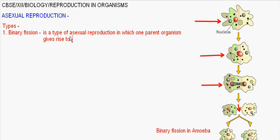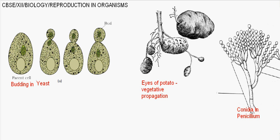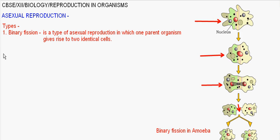Binary fission is found in amoeba. Another type is fission found in Plasmodium, where one individual cell divides into many progenies. In the next page, we can also see budding — most common in yeast — as well as vegetative propagation, which is common in many plants, and reproduction by spores.